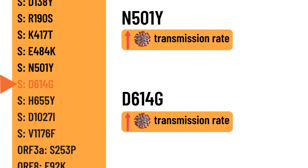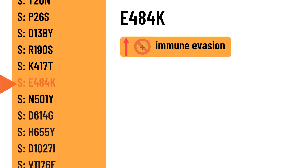The gamma variant also has the E484K mutation, which is common in other variants of concern including the beta variant. This mutation is the main cause of the reduction in efficacies of vaccines, as most available vaccines are constructed based on the spike protein of the original SARS-CoV-2. To know more about the impact of E484K, feel free to watch the video for the beta variant on this channel.